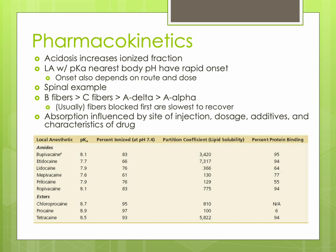The onset of action also depends on the route of administration and dose or concentration. Local anesthetics injected into the cerebrospinal fluid reach targets quickly due to the lack of a sheath around the nerve roots — which is why a spinal has a faster onset than a peripheral nerve block. In a spinal, B fibers are blocked first. Differential blockade refers to how susceptible nerve fibers are to local anesthetic conduction blocks. In vivo, local anesthetics inhibit B fibers, then C fibers, then A-delta fibers, then A-alpha fibers. Under most circumstances, the nerves blocked first are the slowest to recover.